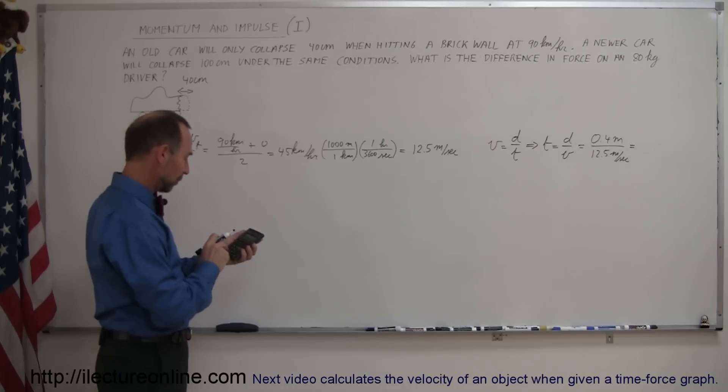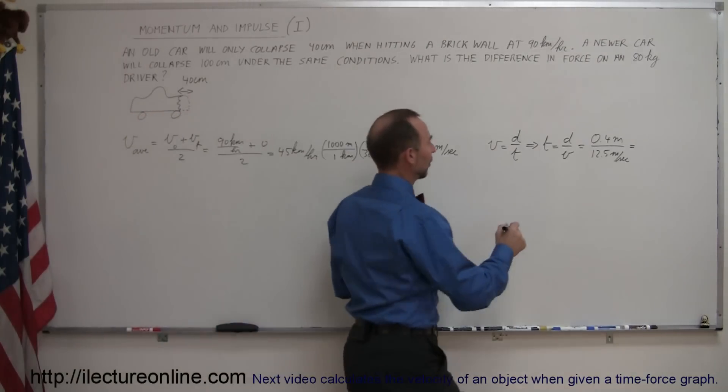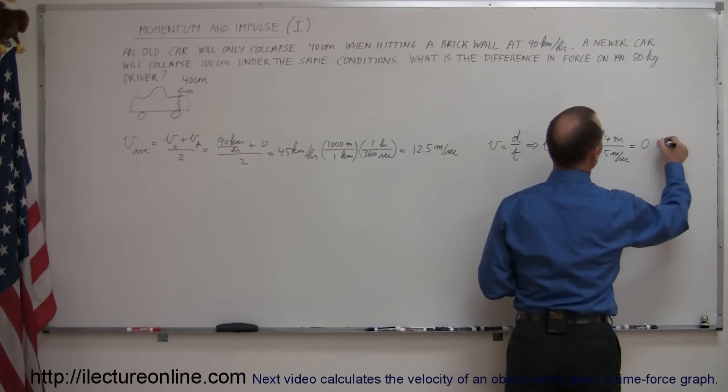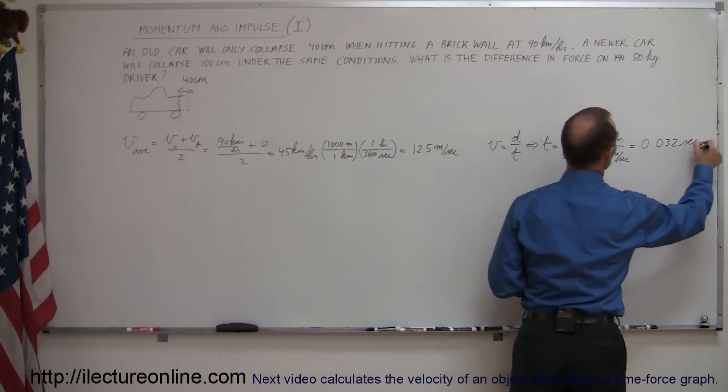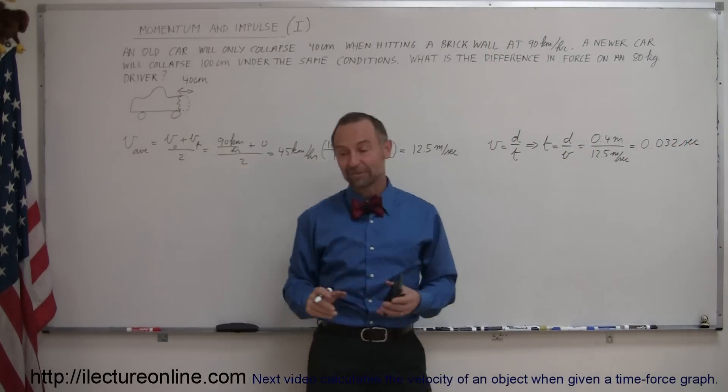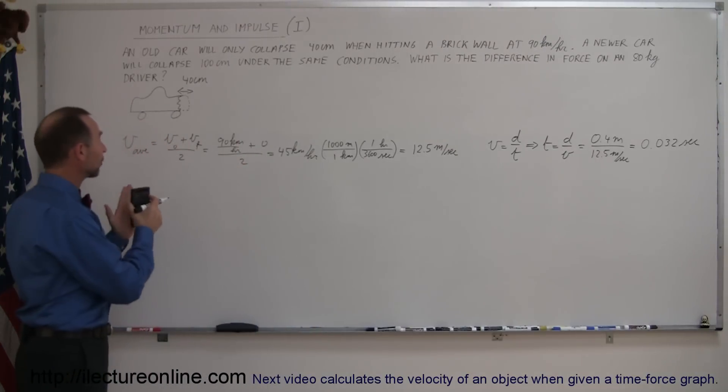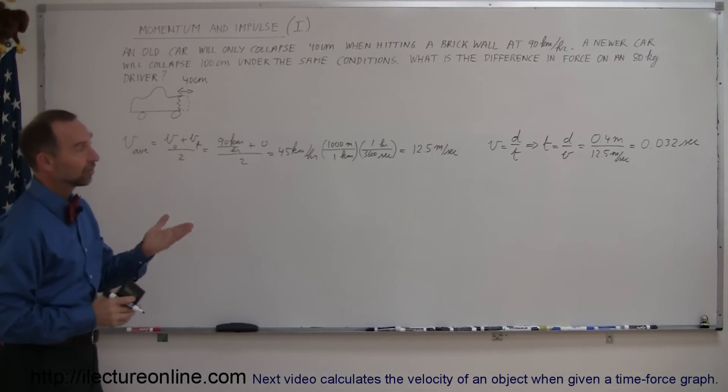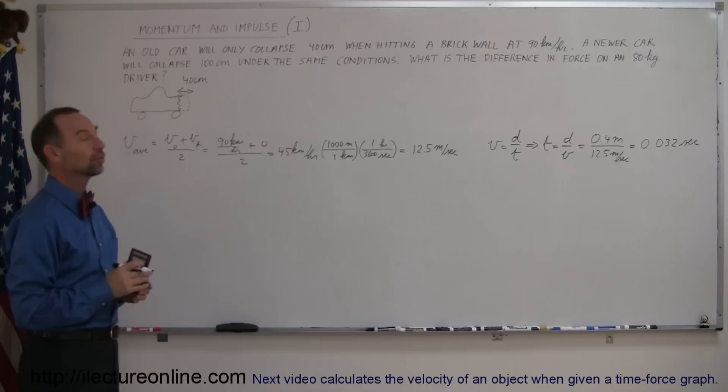So 0.4 meters divided by 12.5 meters per second will give us the time that that particular collision lasted. That would be 0.4 divided by 12.5 and that's 0.032 seconds, which is 32 milliseconds. So in a front-end collision with an old car that only collapses 40 centimeters, the collision lasts about 0.032 seconds.